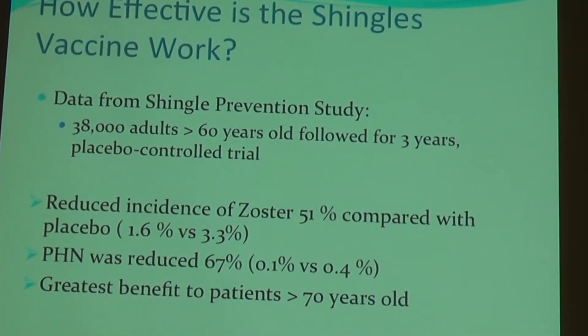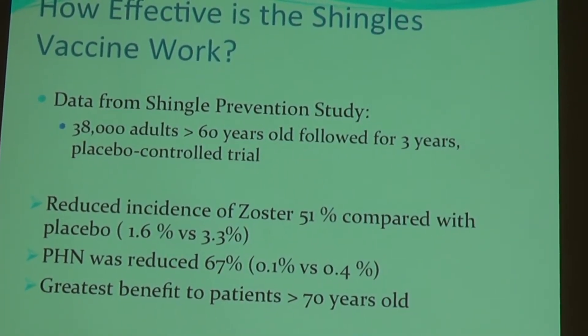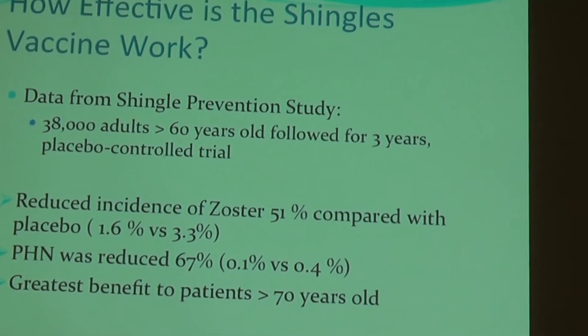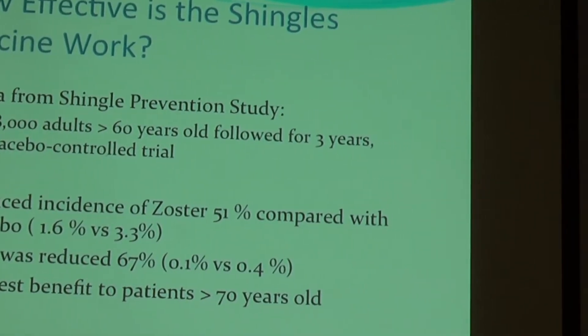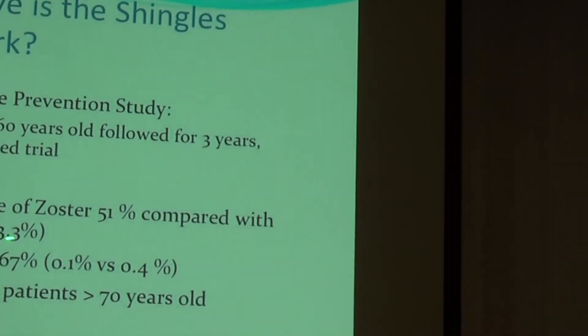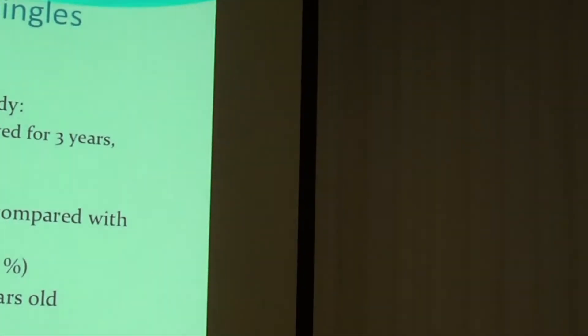I do want to point out that even if you get the vaccine, it doesn't guarantee protection from zoster — it reduced the incidence by 50%, but the other 50% could still get it. Similarly, even if you get the vaccine and develop zoster, you might still develop post-herpetic neuralgia, but your chances of that complication are decreased. So it's a vaccine that's effective, but no guarantee.